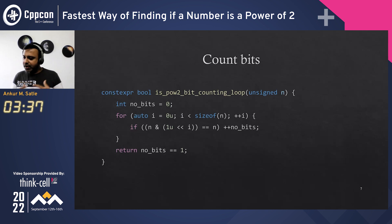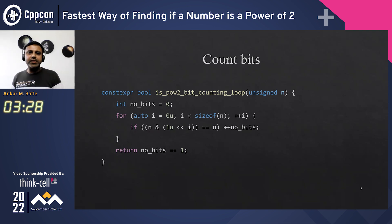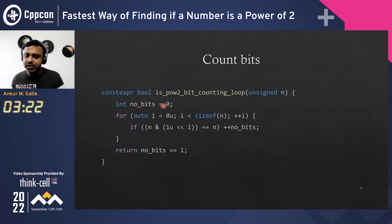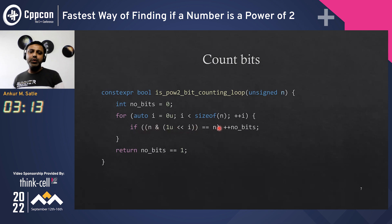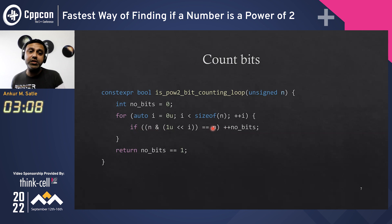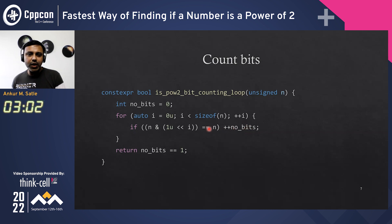I've asked this question in a number of forums, and these functions are based on some of the answers I've got. This is a loop which goes through all the bits and counts how many ones it encounters — you rotate one those many times and AND it with n. If you get back not zero, you count the number of bits. So if the number of bits is one, you know you have come across a power of two.